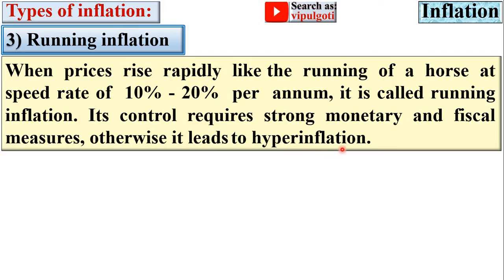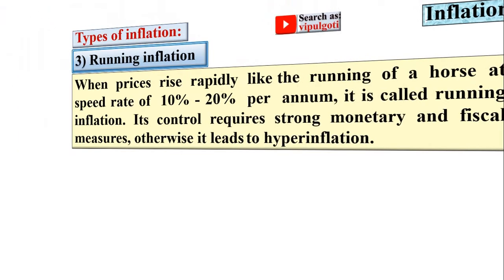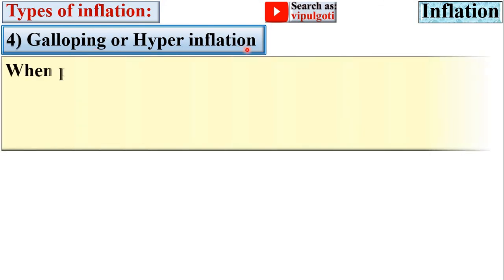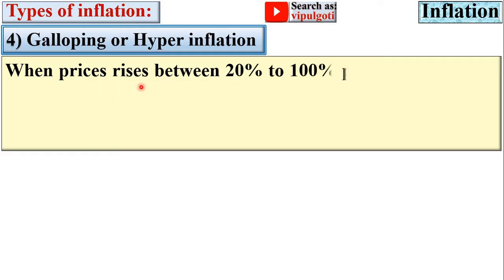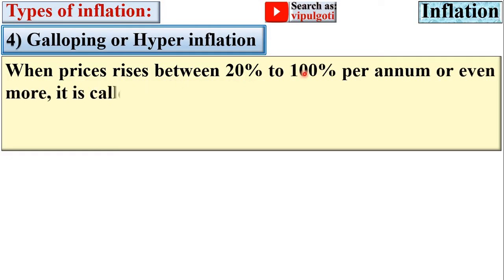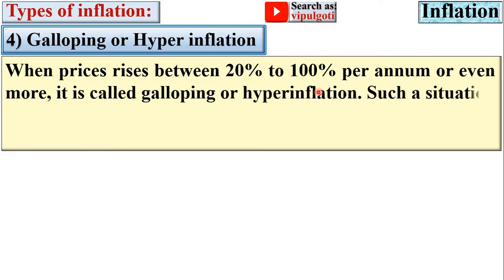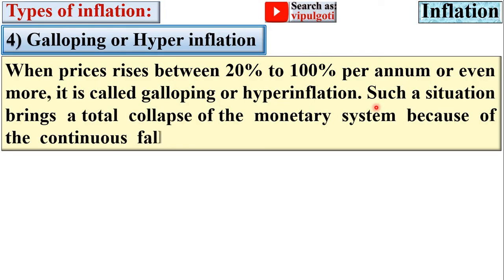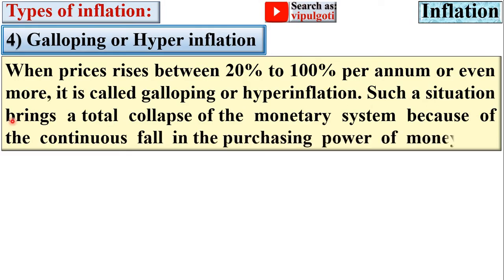Hyperinflation is sometimes called galloping inflation. When prices rise between 20% to 100% per annum or even more, it is called galloping or hyperinflation. Such a situation brings a total collapse of the monetary system of the country because of the continuous fall in the purchasing power of money.